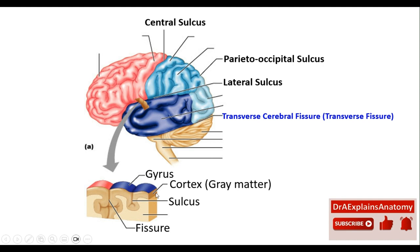This right here is the cortex, also called the cerebral cortex, which consists of the gray matter. Whereas this right here is the white matter. The white matter appears lighter in color because it is rich in myelinated axons, whereas the gray matter appears darker in color because it is rich in neuronal bodies.